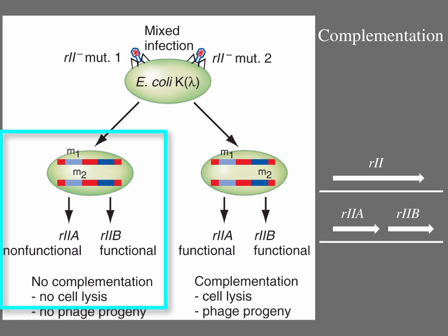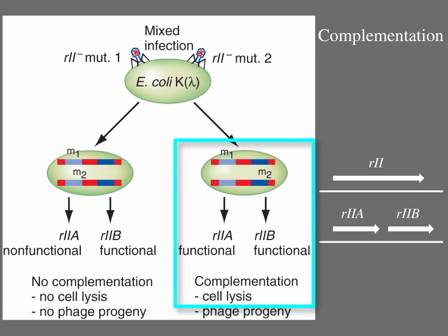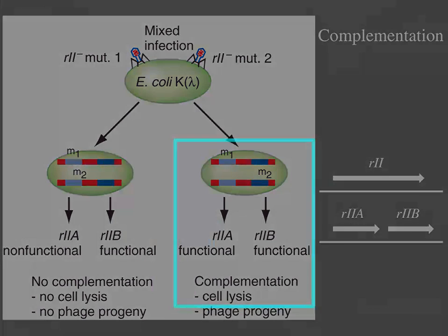In some co-infections, one R2 mutant had a mutation in the A gene that prevented it from making A protein and the other R2 mutant could not make B protein because it had a mutation in the B gene. Each R2 mutant genome provided the functional R2 gene that the other lacked, resulting in complementation to the wild-type, R2+, phenotype, the ability to propagate in and lyse E. coli K.